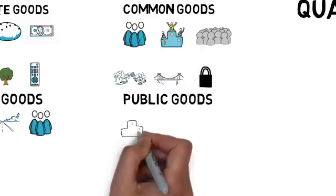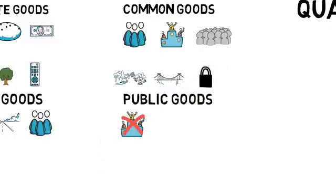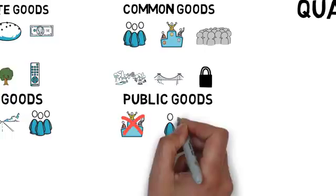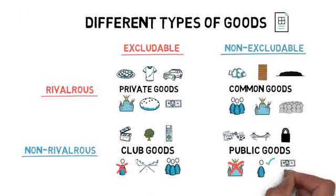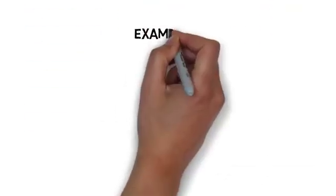We don't have to compete for them and we cannot be excluded from them either by being priced out or not belonging to a specific group of people. Let's have a look at some examples of public goods that can benefit from quadratic funding.